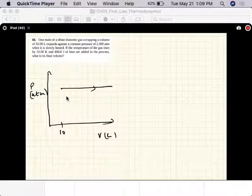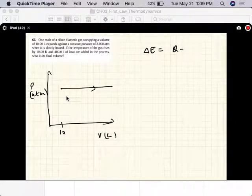So let's see. Delta E equals Q minus W, and the final volume V_final, okay.